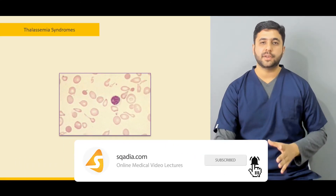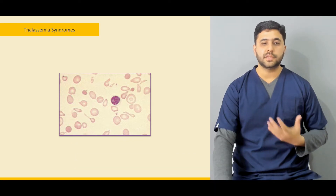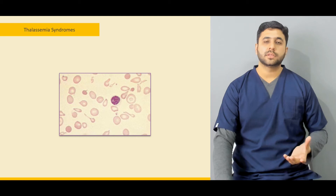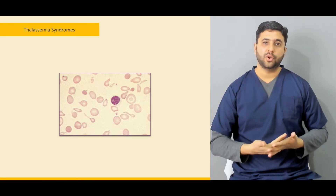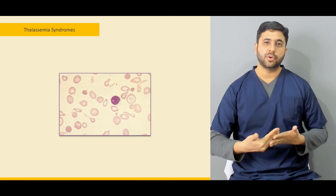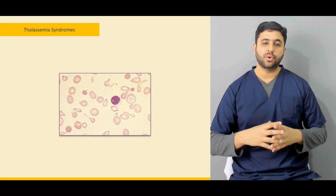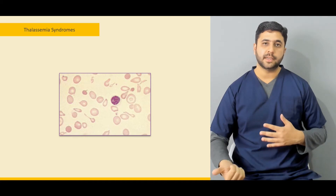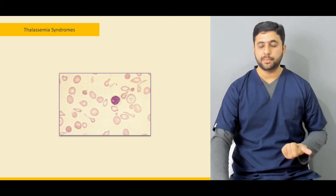Then we are going to shift our focus to the major topic of discussion in this lecture, which are the thalassemia syndromes. We are going to discuss what are the globin chains, what are the types of globin chains, how the various types of hemoglobins incorporate the globin chains, and what can go wrong either at the level of the alpha chain or the beta chain that leads to different types of thalassemia formation.